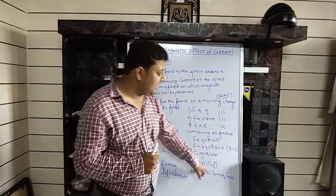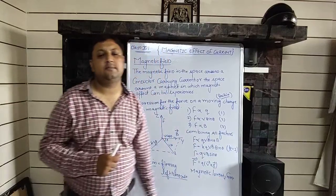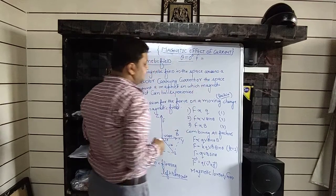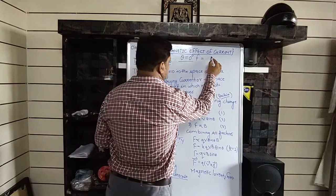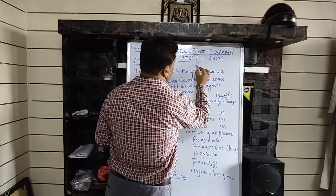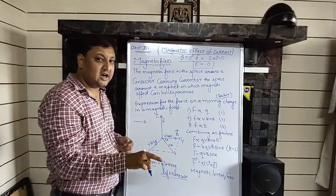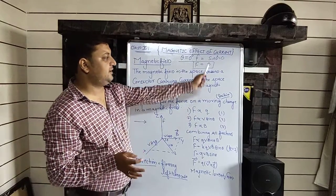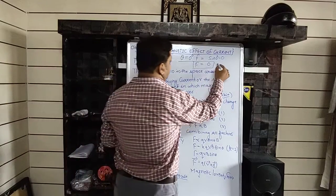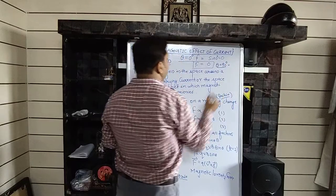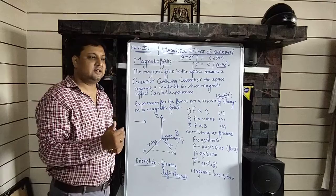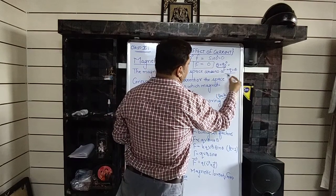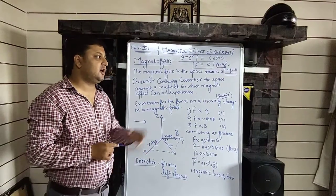From this formula, if θ = 0°, then when a positive charge moves along the direction of the magnetic field, it does not experience any force. Second case: if θ = 90°, sin 90° is maximum — its value is 1. So the force expression becomes F = qvB·1, which gives F = qvB.